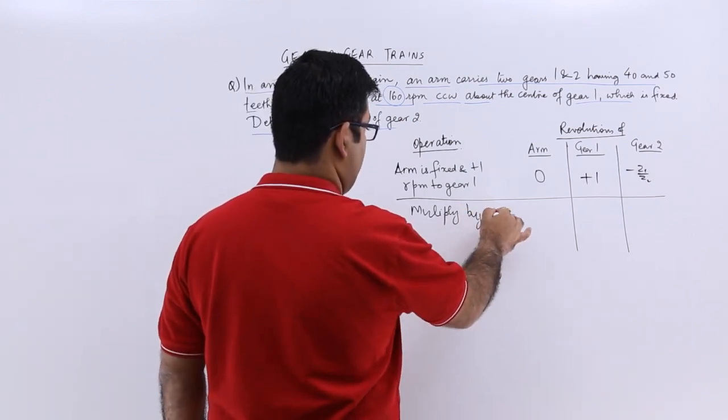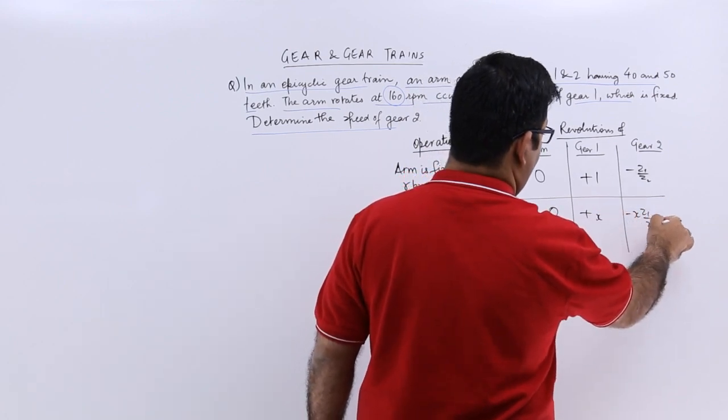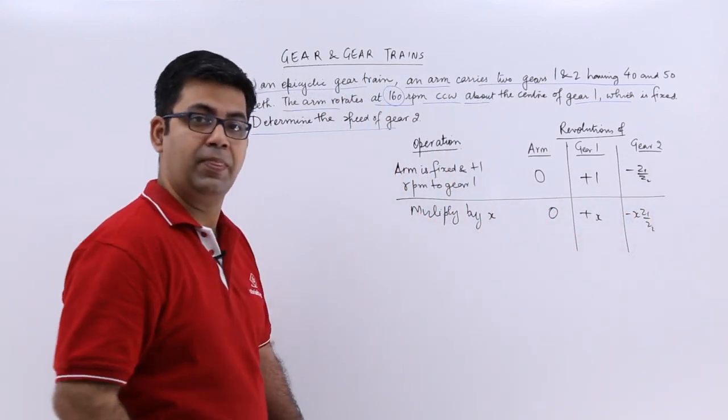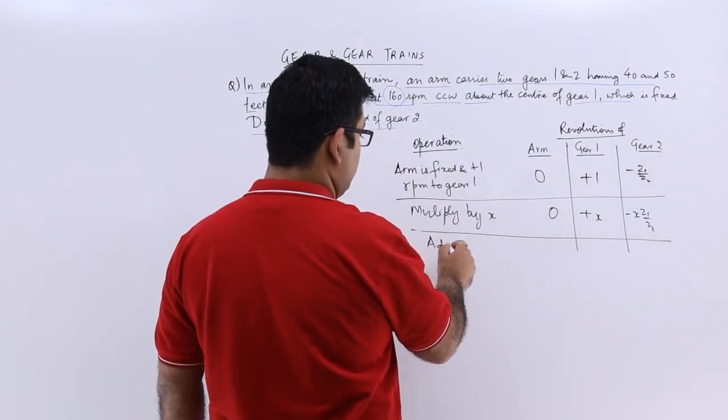So you will have 0 plus x minus x into z1 by z2. Last would be adding y to the entire motion.